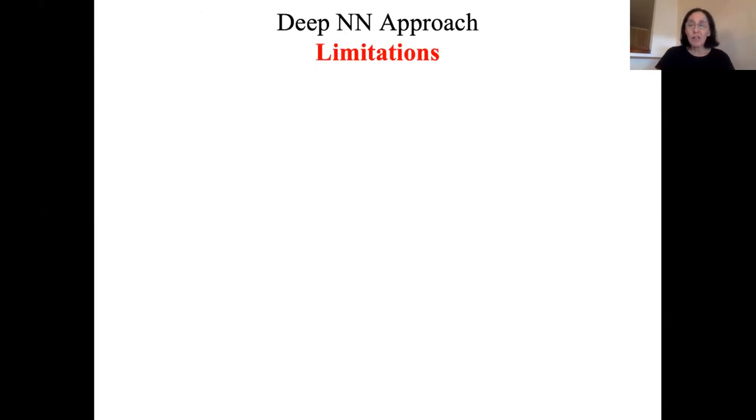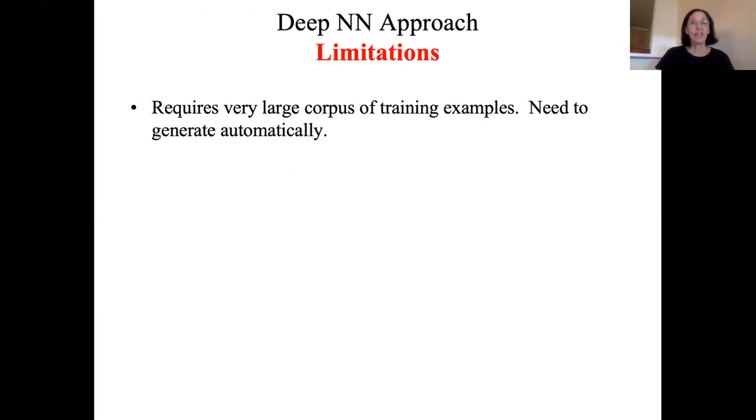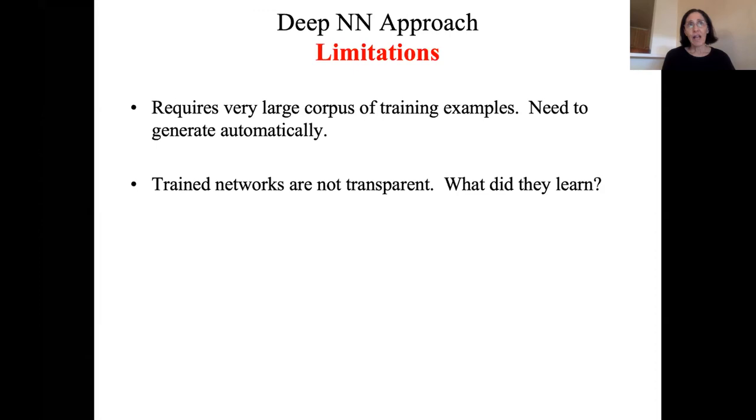The deep neural network limitations here: it requires a very large corpus of training examples, so you need to generate them automatically. And the trained networks are not very transparent. Without some kind of afterwards analysis, it's not clear what they learned. And whether they're actually using the kinds of reasoning that we think needs to be used shows a kind of general ability or not. So they're susceptible to shortcuts.